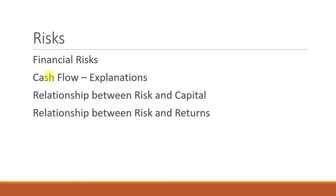Next is the relationship between risk and capital. A bank's capital is the difference between a bank's assets and liabilities, and may include cash, government securities, and loans. In simple terms, the minimum capital required by a business is the maximum loss that may arise from the business so that bankruptcy is avoided.